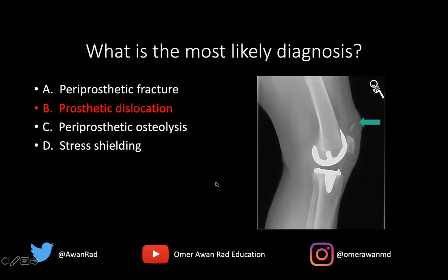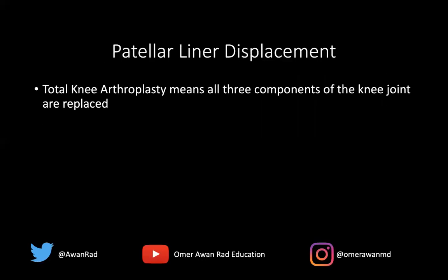This is a nice example of prosthetic dislocation where the patellar liner has been displaced superiorly. Remember, a total knee arthroplasty means all three components have been replaced: the medial femoral tibial, the lateral femoral tibial, and the patellofemoral compartment. A hemi or unipolar arthroplasty means only one compartment has been replaced. You always want to look at all three compartments carefully, because the femoral and tibial components may appear intact while the patellar compartment, as in this case, is not.